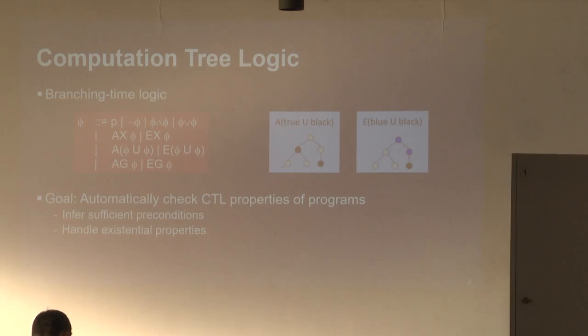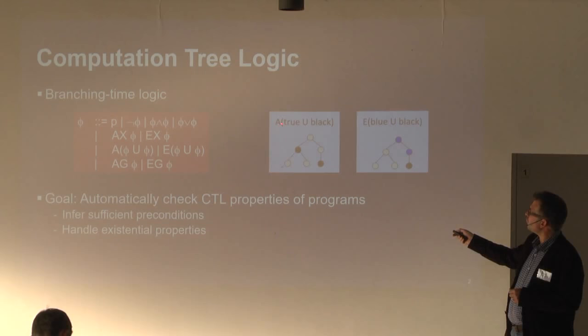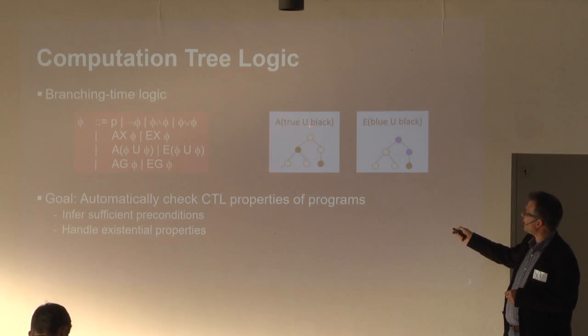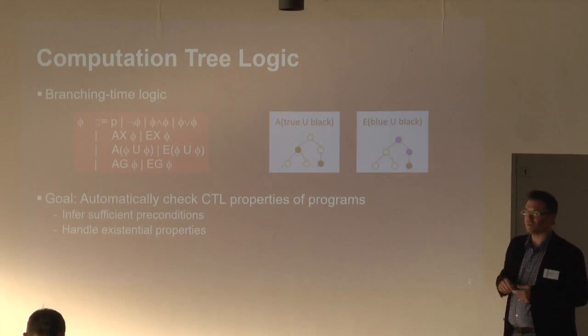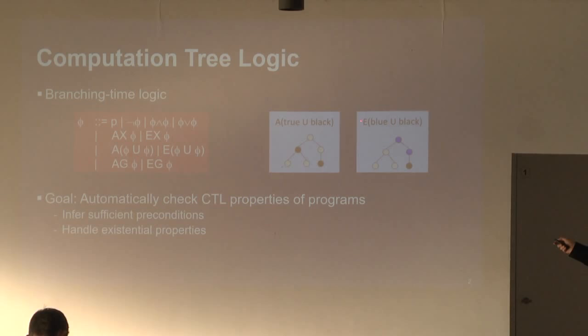Here on the right you see two small examples. The different futures are represented as trees. The one on the left satisfies the formula that in all futures we have true until black — black holds eventually, and until then true holds trivially. On the right we have an existential formula: there exists at least one future in which black holds eventually, and until then blue holds.